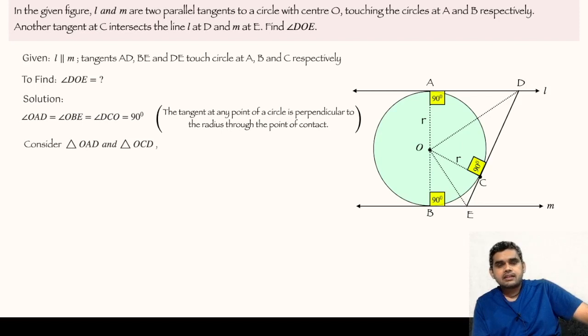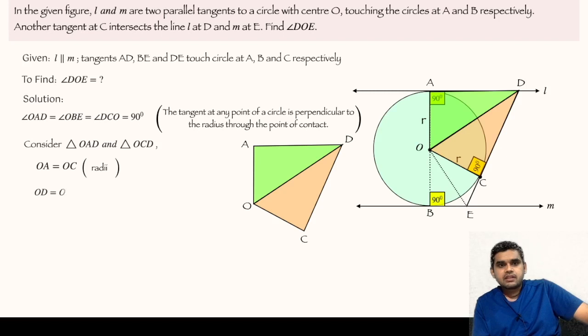Moving ahead, let us consider the two triangles OAD and triangle OCD. OA is equal to OC, the reason being OA and OC are radii of the circle. Likewise, OD is common to both the triangles and DA is equal to DC. Why? Again, because we have a theorem. D is any exterior point and from D two tangents are drawn to the circle.